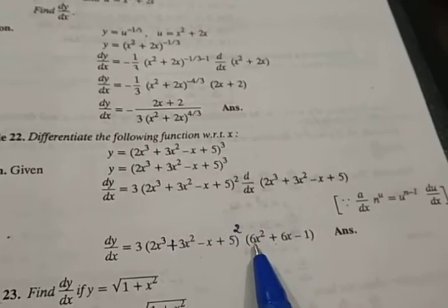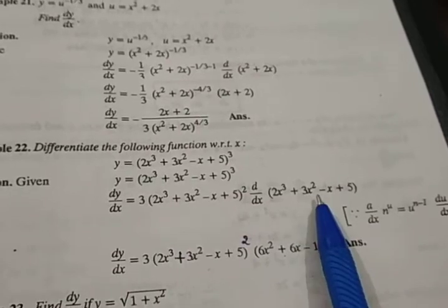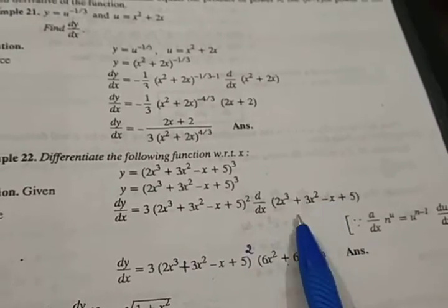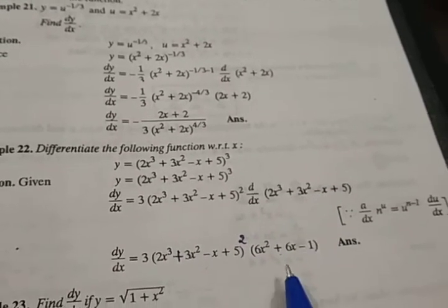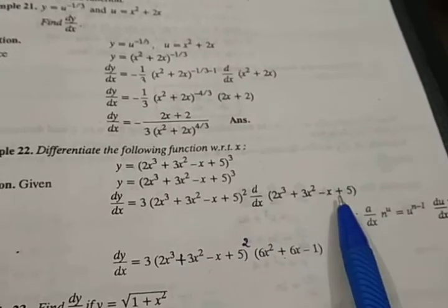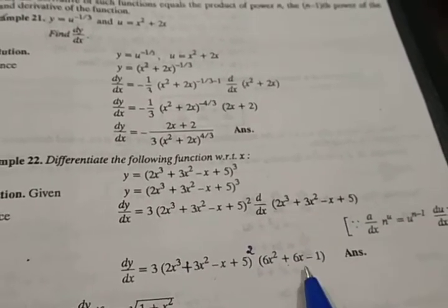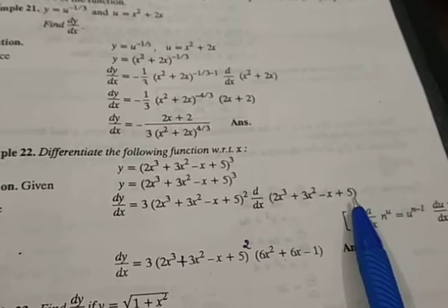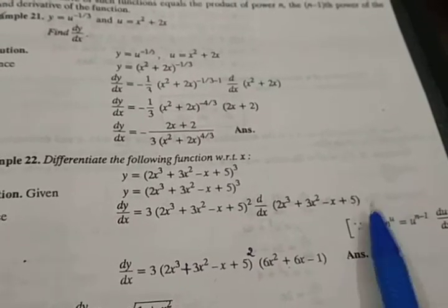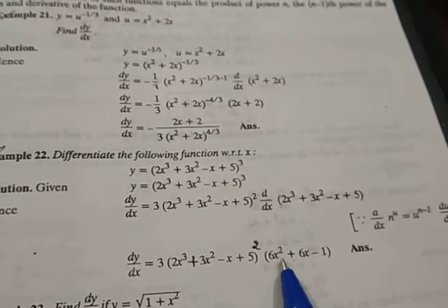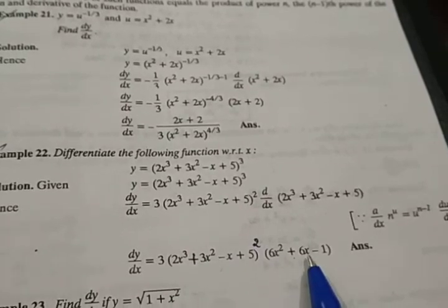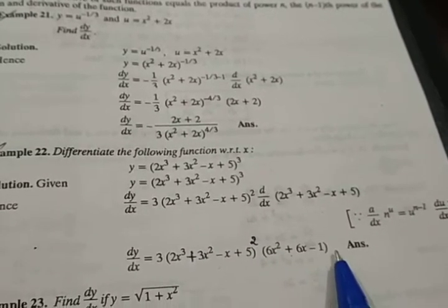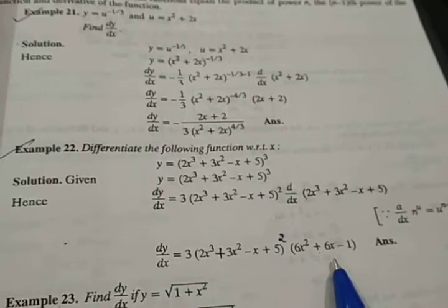Power down, so 6x square this becomes. The derivative of this, 3 into 2, becomes 6x, minus, derivative of x is 1, plus, derivative of 5, 5 is constant so its derivative is 0. So you get this, 6x square plus 6x minus 1. So this becomes the answer.